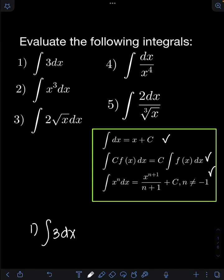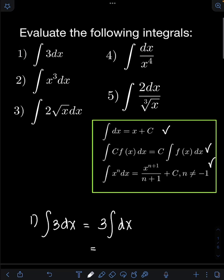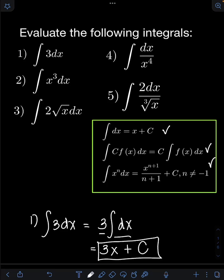To evaluate this first integral, the integral of 3 dx, we can apply this formula. We put the constant 3 in front of the integral, so we have 3 times the integral of dx. From the first formula, the integral of dx is just equal to x. So finally, we have 3 times x, plus the constant of integration c. This is the final answer.